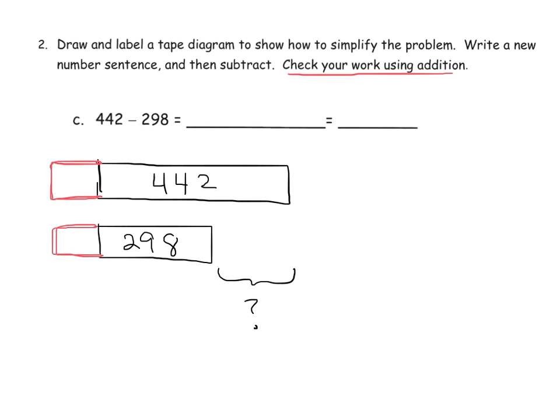which means we're going to add 2. And we're going to add 2. So that makes the problem 444 minus 300, which is equal to 144. Now, how are we going to check? So our gap right here is 144. So how are we going to check?